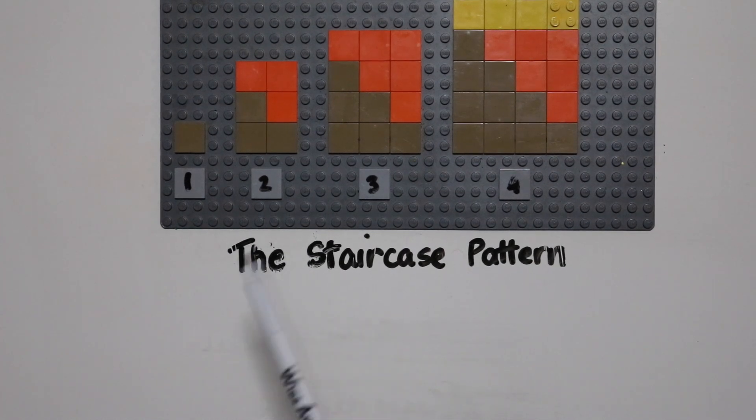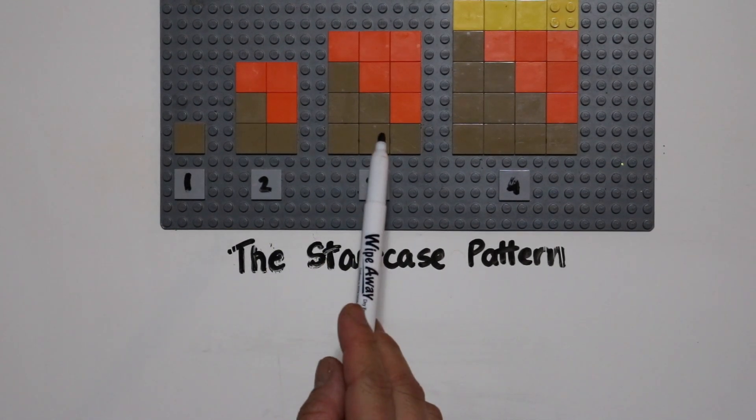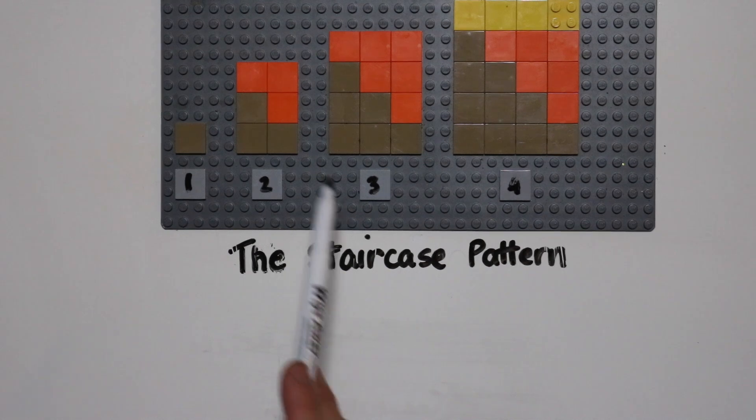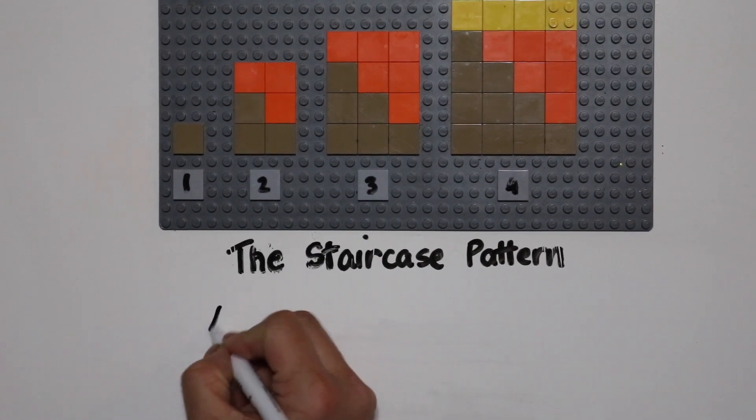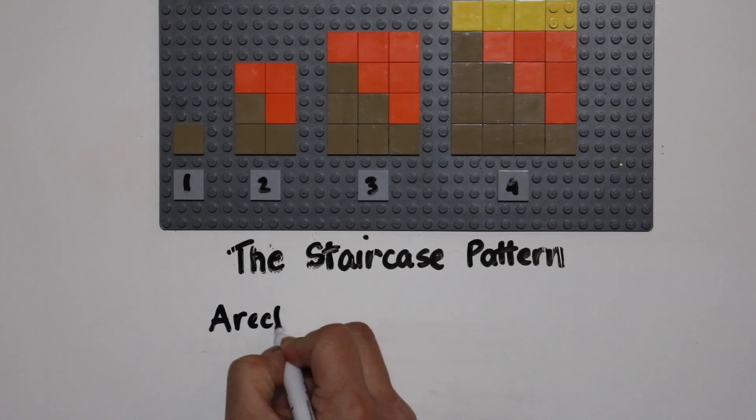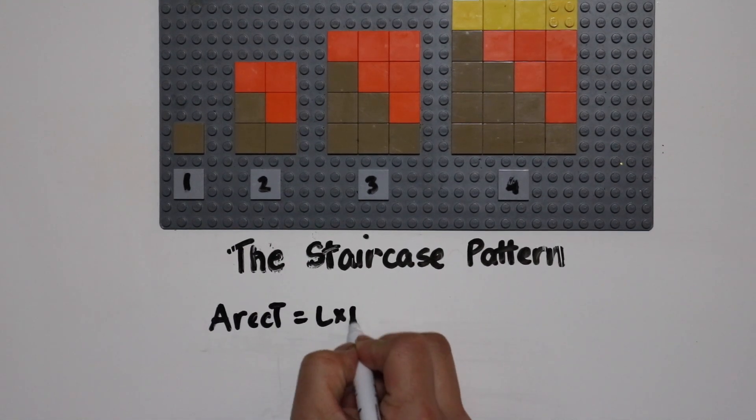So if you were to look at one rectangle, the number of tiles that makes up the entire rectangle is essentially the area. The area of a rectangle is the length times the width.